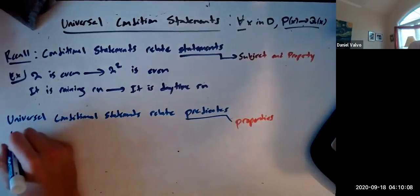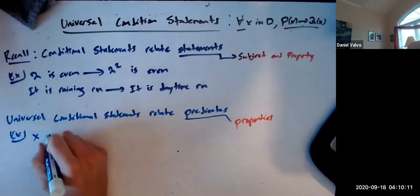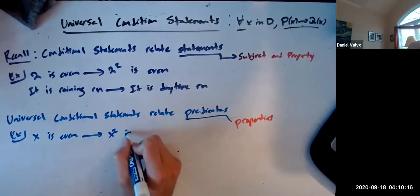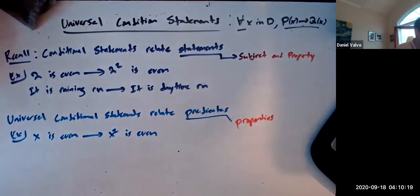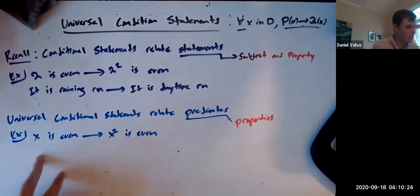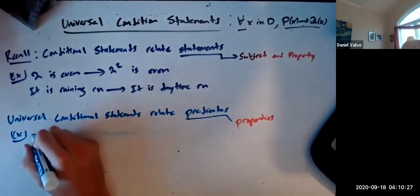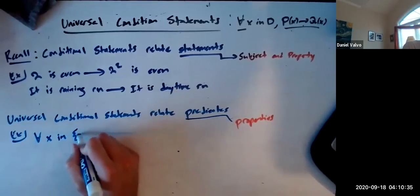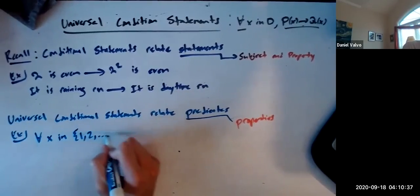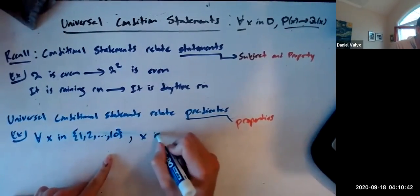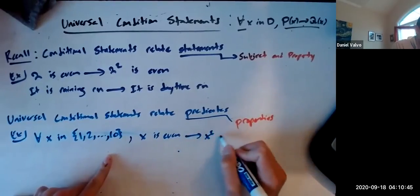So for example, the equivalent here would be saying that X is even implies X squared is even, right? So here you have this disembodied subject - the subject is X. Actually, I'm sorry, you also need a domain. So we could say, for all X in the numbers 1 to 10, for all X in that domain, X is even implies X squared is even.